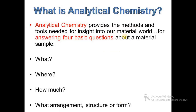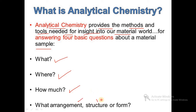Analytical chemistry provides the methods and tools needed for insight into our material world by answering four basic questions about a material sample: what type of material is it, where is it formed, how much quantity is present, and what is the arrangement of its structure or atoms — or which form the material is in — which can all be determined by analytical techniques.